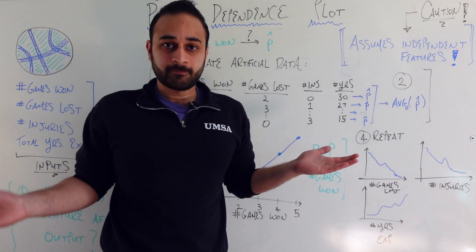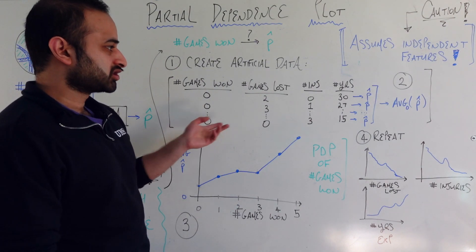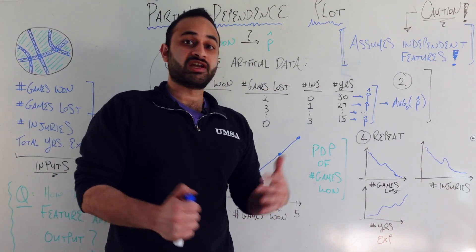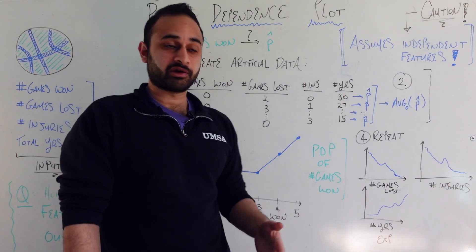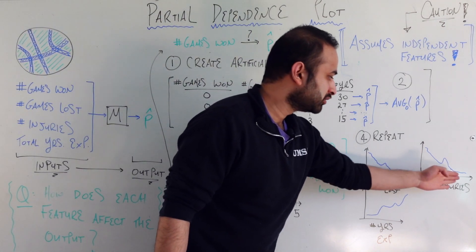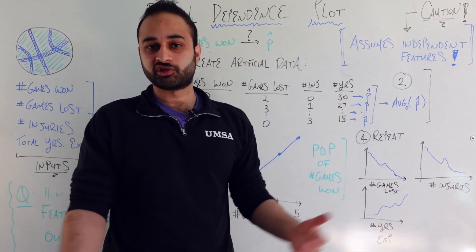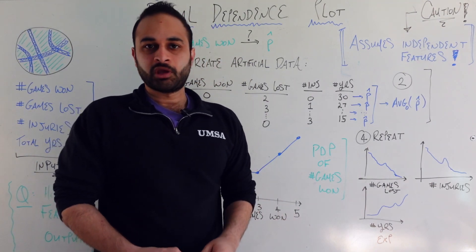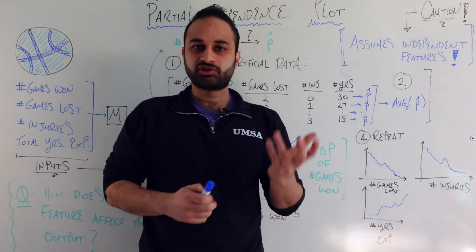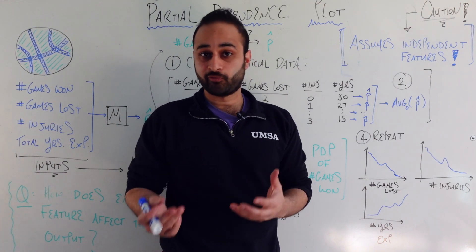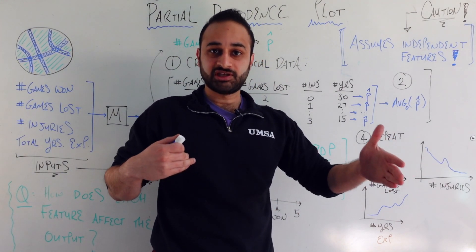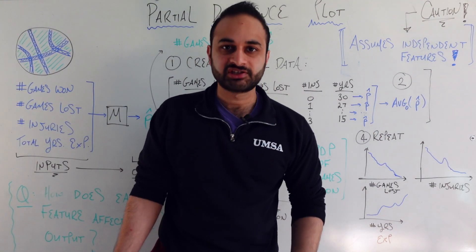We just apply the same technique to each of the other columns. For example, to understand how the number of injuries affects the predicted probability: if injuries range between zero and ten, you set the whole injuries column to zero, calculate the average probability, then set it to one, and so on. You'd probably get a plot showing that more injuries means a lower probability of winning. That's the real power of partial dependence analysis — we do some transformations to the original dataset to understand how each variable independently affects the model's output.